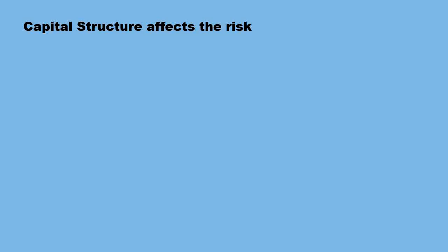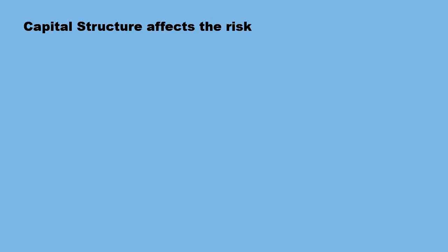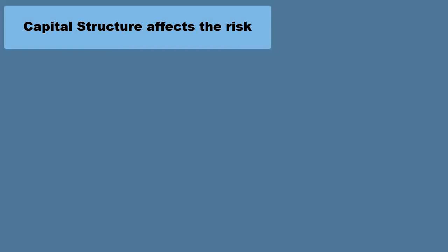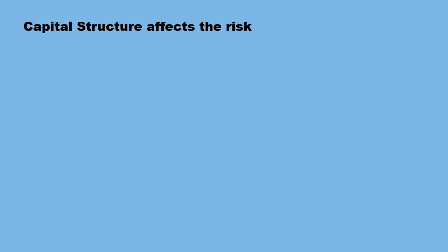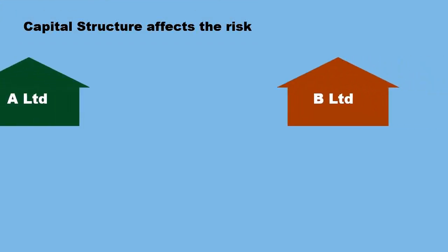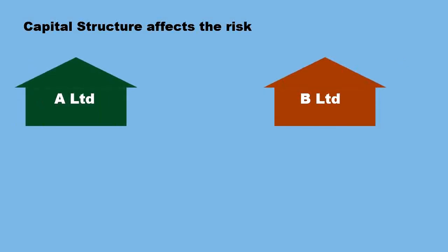The reason why betas of two companies may not be comparable straight away is because beta is affected by the way in which the capital of the company is structured — in other words, the capital structure, or debt-equity structure, or what is also known as the gearing structure, affects the risk profile. To understand this, let us take two companies, A Limited and B Limited. Both companies have an asset base of 100 crores, but the way in which they are funded is quite different. Company A is funded by equity to the extent of Rs. 75 crores and the balance 25 crores is funded by debt.